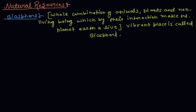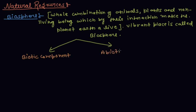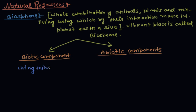Biosphere has two types of components. First is the biotic component, and the second is the abiotic component. Living things constitute the biotic component of the atmosphere.